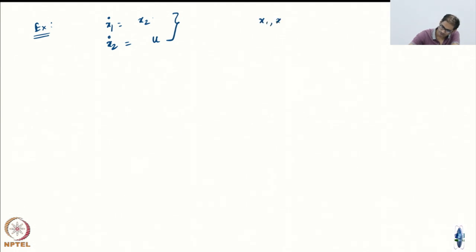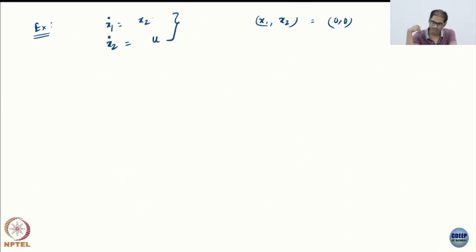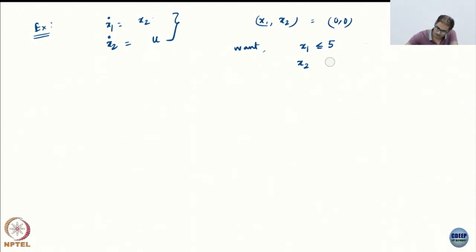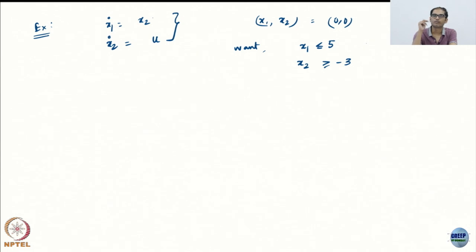I want to go to x1=0, x2=0 as my target equilibrium. And I want to make sure that x1 is less than or equal to 5 and x2 is greater than or equal to minus 3 and less than or equal to 3.